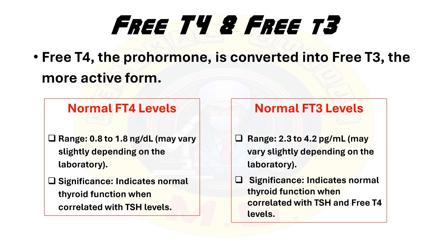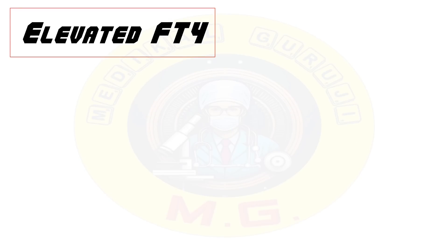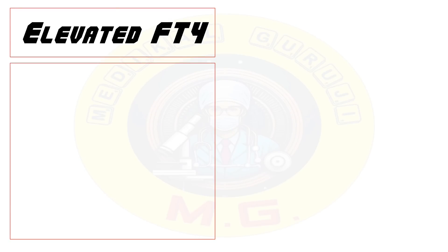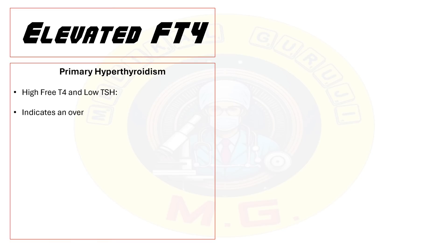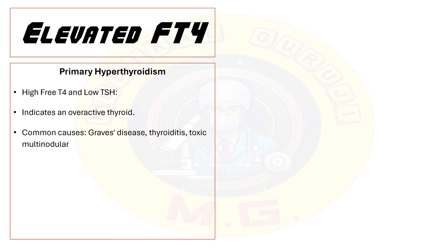Elevated free T4 levels are found in primary hyperthyroidism. High free T4 and low TSH indicates an overactive thyroid. Common causes are Graves' disease, thyroiditis, and toxic multinodular goiter.